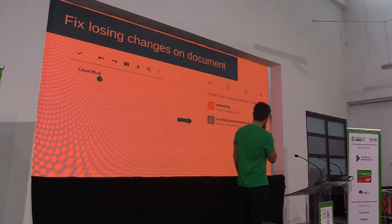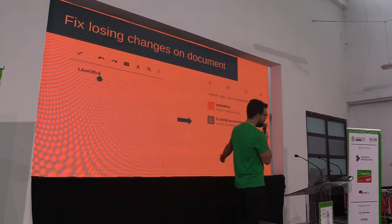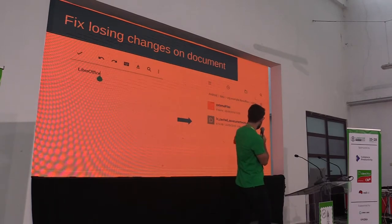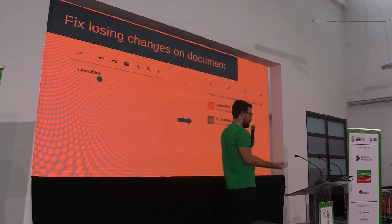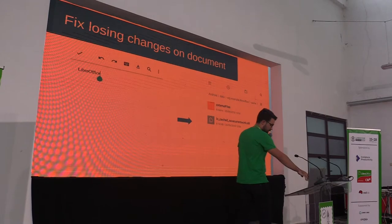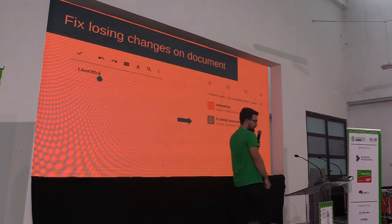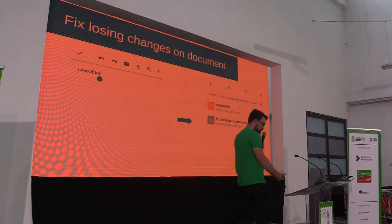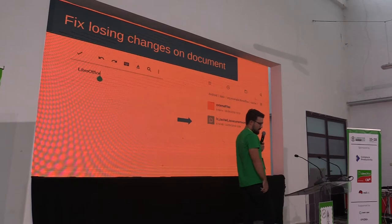With this fix, now the Android Viewer stores all the changes you made into a cache file. When you switch back to the Android Viewer, it loads this cache file instead of the original file that had none of your changes. So now you can save your data reliably.